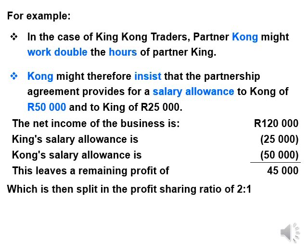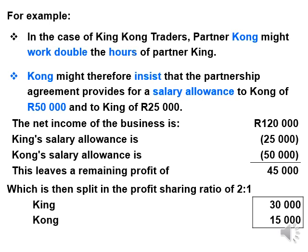This remaining profit is then shared according to the profit-sharing ratio of 2 to 1. So the profit-sharing ratio does not apply to the net profit directly — we first need to deduct the salary allowance of each partner, which gives us a remaining profit, and then the profit-sharing ratio is calculated on the remaining profit. The remaining profit in this case is $45,000. King will get 2 out of 3 parts and Kong will get 1 out of 3 parts, which means King will get $30,000 and Kong will get $15,000.